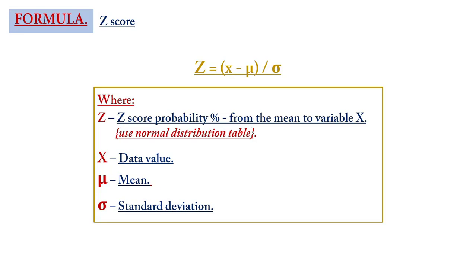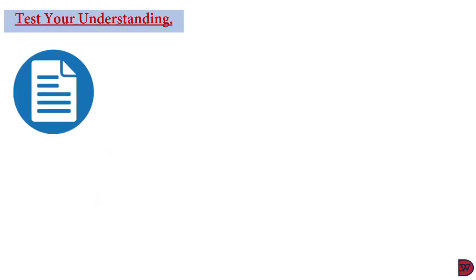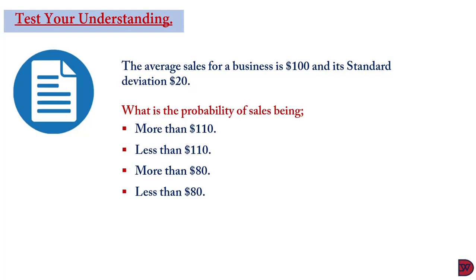Let's test our understanding. The average sales for a business is $100 and its standard deviation is $20. We are supposed to find the probability of sales being more than $110, less than $110, more than $80, and less than $80.